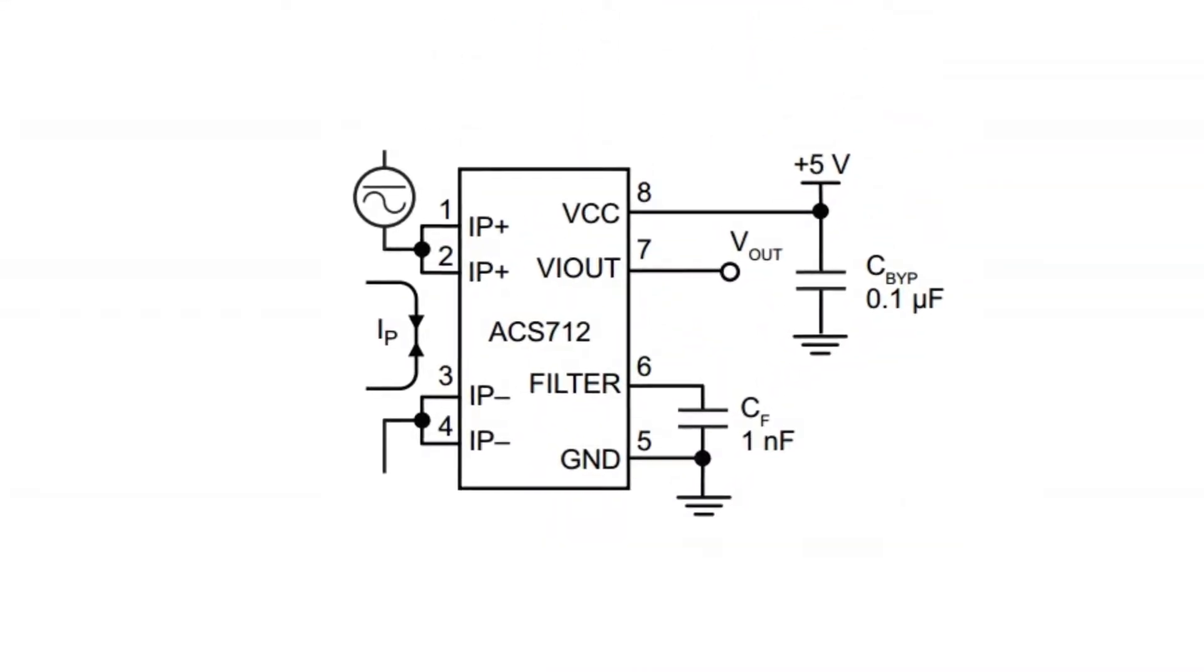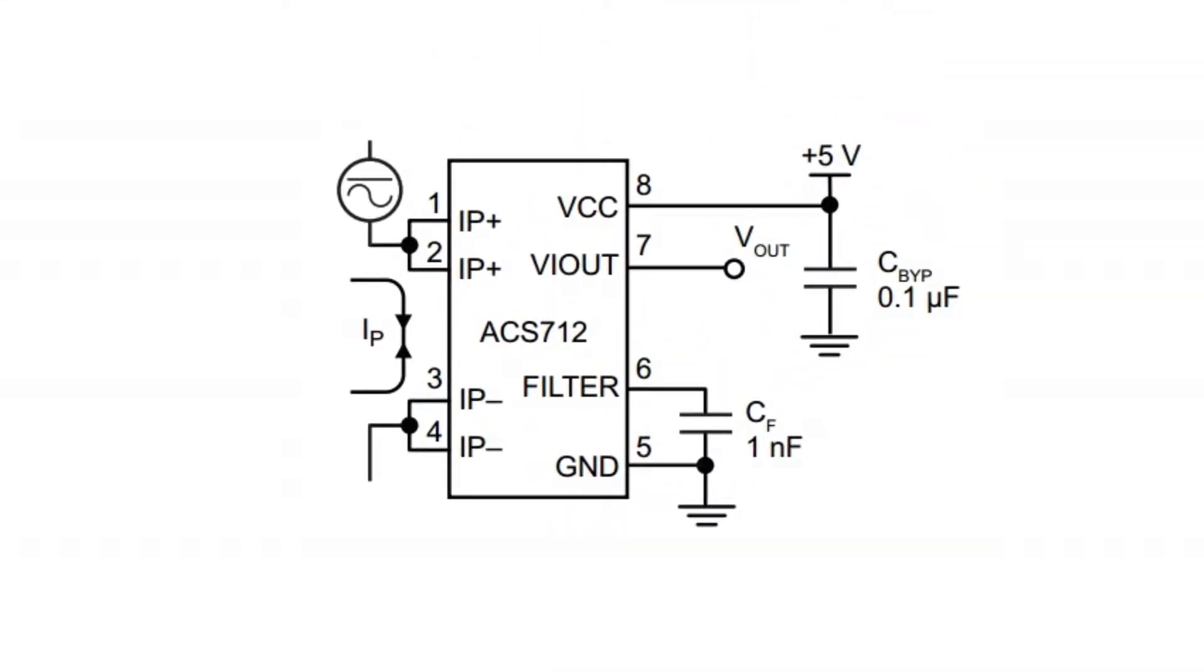From the typical application diagram of the sensor, we see that it consists of 8 pins and current is passed through pins 1, 2 and 3, 4. This side is totally isolated from the output side.